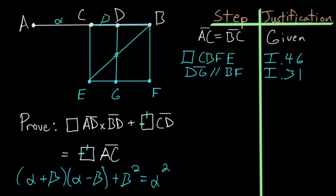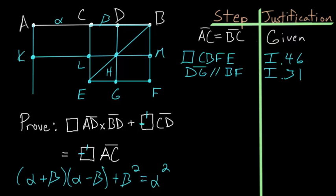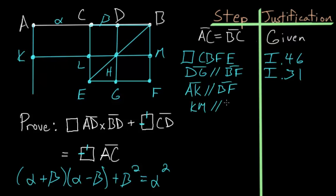We label this intersection point H, and through H we create a line parallel to AB. I've created line KM parallel to AB, and also line AK parallel to line BF. Both parallel lines are constructed using Book 1 Proposition 31.